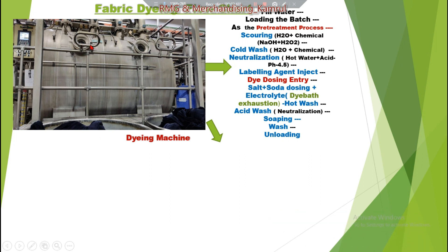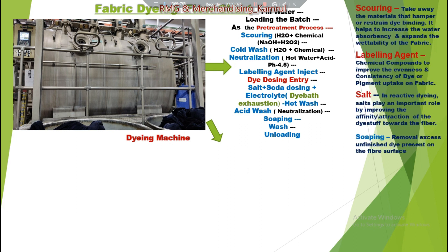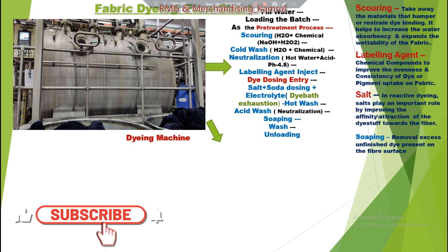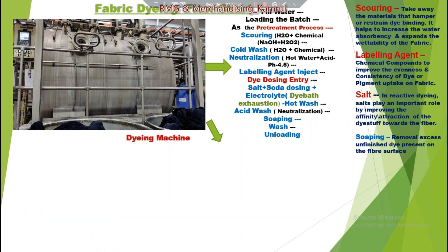After loading the batch, some treatments must be done. The first pre-treatment process is scouring. Scouring uses water and chemicals such as sodium hydroxide and hydrogen peroxide. The scouring process removes materials from the fabric that hamper or restrain the dye from penetrating properly, so those materials are taken away from the fabric.